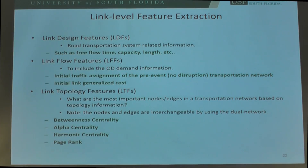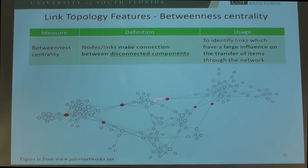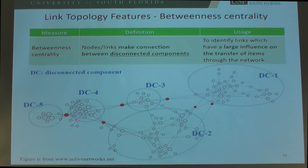The third part of features are topology features, where we want to answer: what are the most important nodes or edges in a transportation network based on topology information? We propose four types of topology features. Note that nodes and edges are interchangeable because we can get a dual network of the transportation network by switching nodes and links. The first type is betweenness centrality, which identifies nodes or links that make connections between connected components — links with large influence on the transfer of flow through the network.